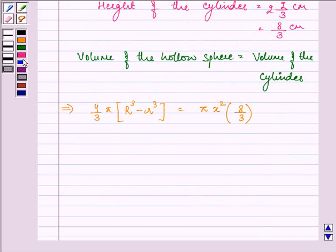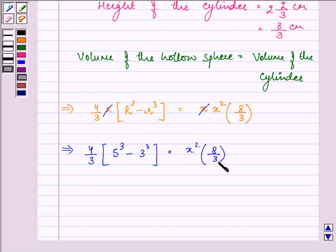Let us find out the value of x. The next step is to substitute the known values. 4/3 π and π will get cancelled. 5³ - 3³ is equal to x² × 8/3.